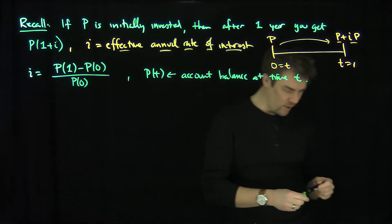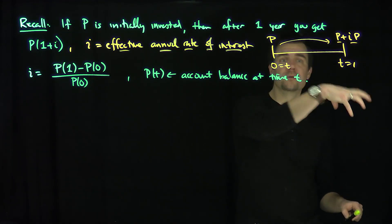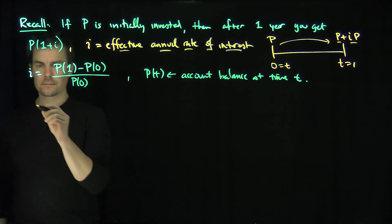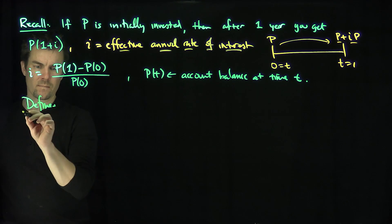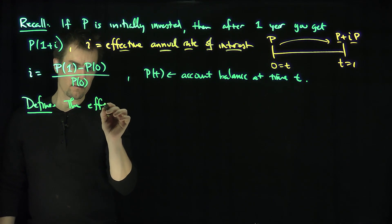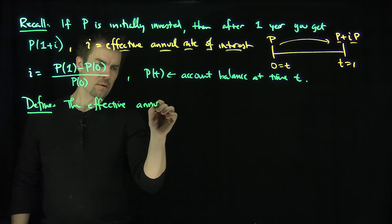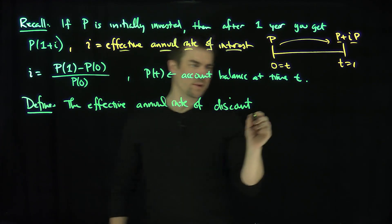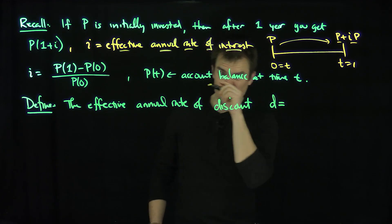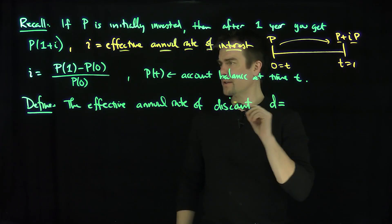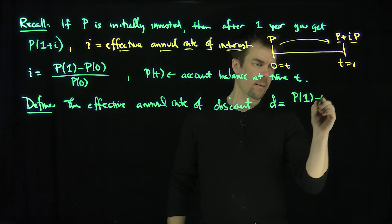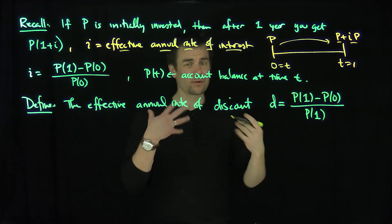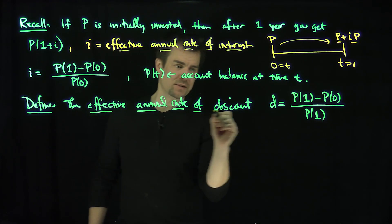There's an alternative way of doing this — the discount way. In the interest way, you get all of your interest at the end of the period. In the discount way, you get all of your interest at the beginning of the period. We define the effective annual rate of discount to be d, and it equals P(1) minus P(0) over P(1) — not P(0) in the denominator, but P(1).